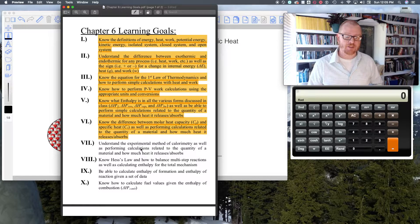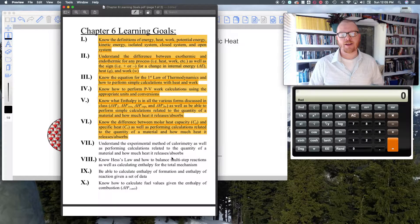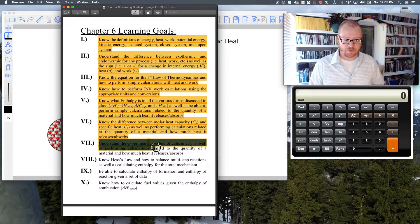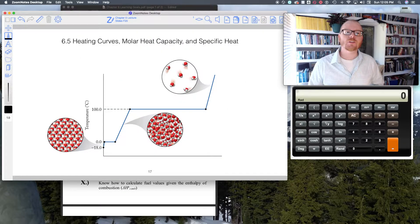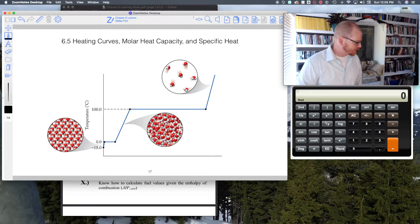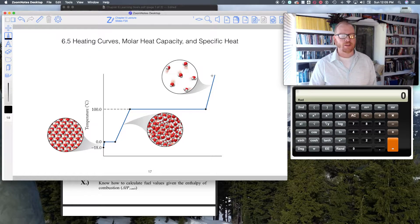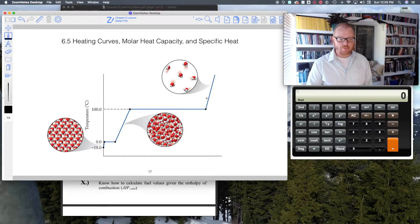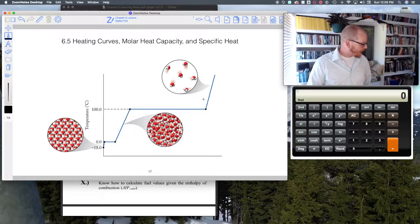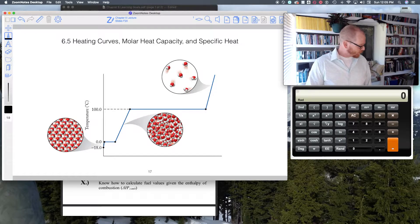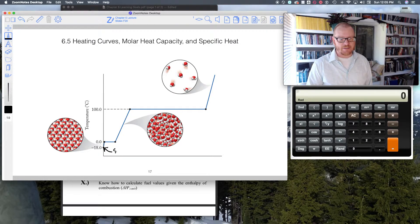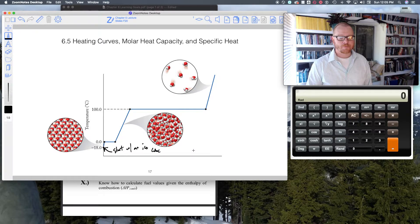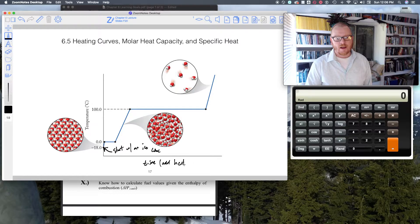Basically, we're talking about heat capacity in this new video, and we're going to talk about the experimental method of calorimetry. So here we go: heating curves, molar heat capacity, and specific heat capacity. Let's go back to our example of boiling and melting water. Water is my favorite molecule. What I want to point out are some interesting things you would see if you started at minus 18 degrees with an ice cube and steadily applied heat over some period of time.